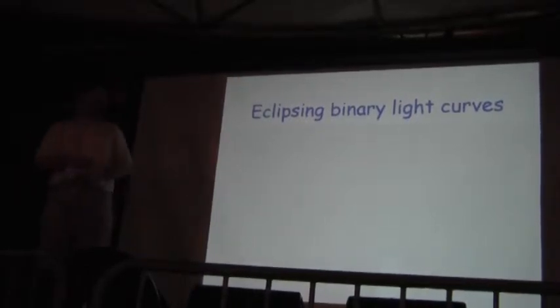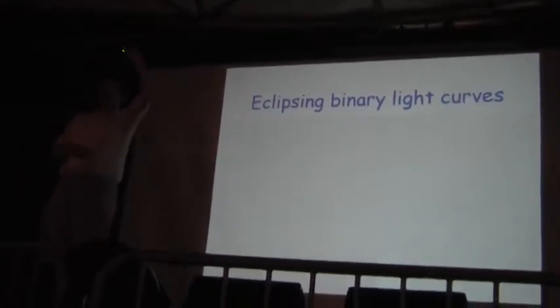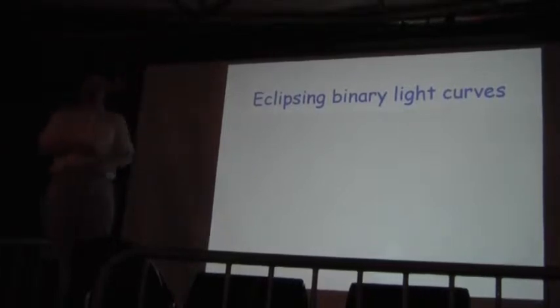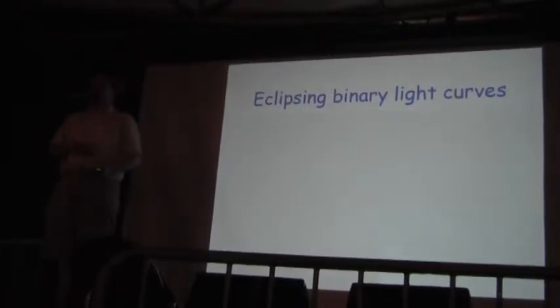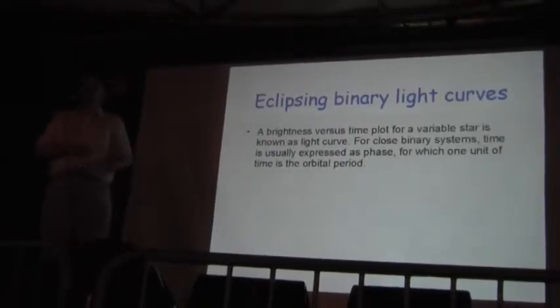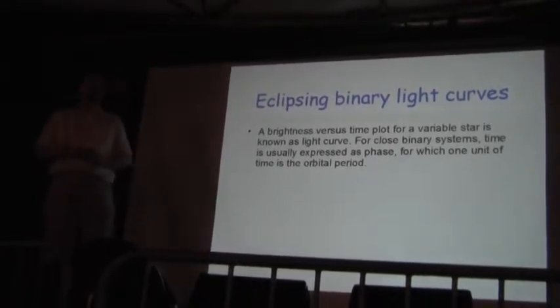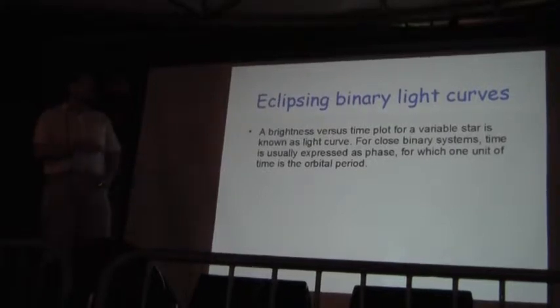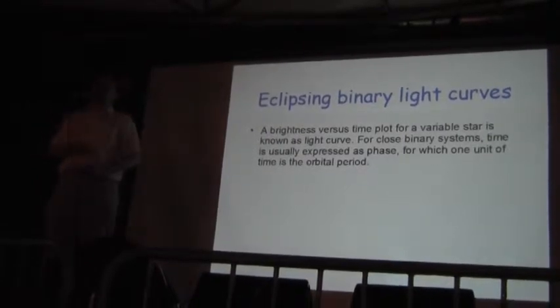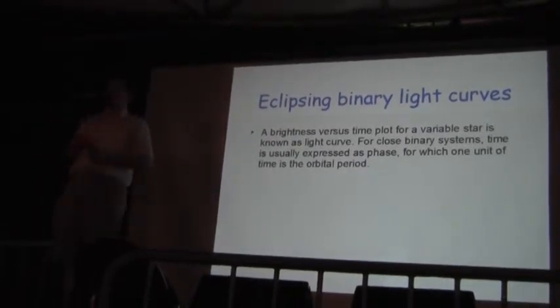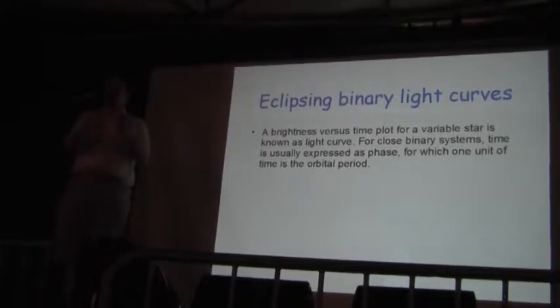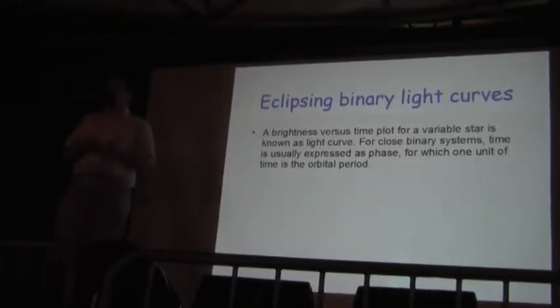So, how do we classify an eclipsing binary light curve? Anybody here taking Astronomy 101 or Astronomy 205? Any star that has a brightness that varies with time is known as a variable star. Most are close binary systems. Some pulsate, as in Polaris. The North Star is actually a Cepheid variable and it pulsates. It actually physically gets larger and smaller, and as a result, the light is brighter or dimmer.